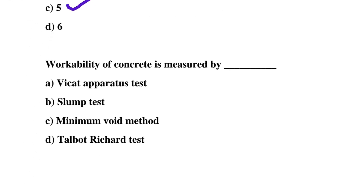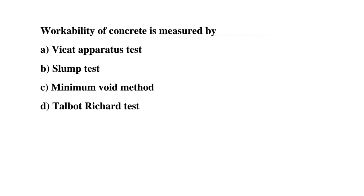So next question: workability of concrete is measured by — option A: Vicat apparatus, option B: slump test, option C: minimum void method, option D: Vee-Bee consistometer test. So the correct answer is option B, slump test.